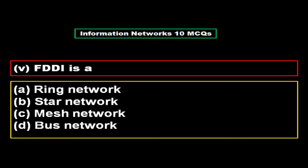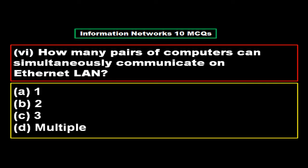FDDI is a: option A ring network, option B star network, option C mesh network, option D bus network. The right answer is option A, ring network. How many pairs of computers can simultaneously communicate on Ethernet LAN? Option A 1, option B 2, option C 3, option D multiple. The right answer is option D, multiple.